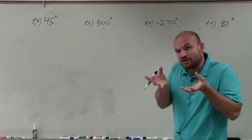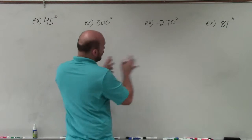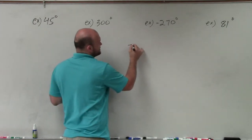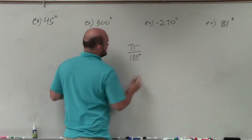So to basically do that, we have our conversion ratio. To go from degrees over to radians, we need to multiply by pi over 180 degrees.